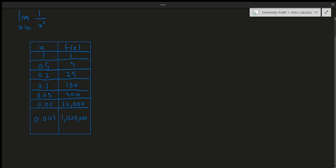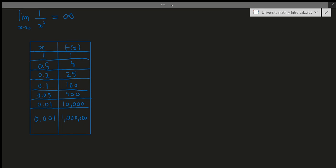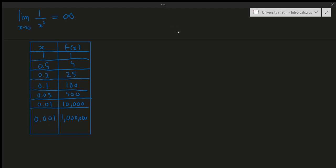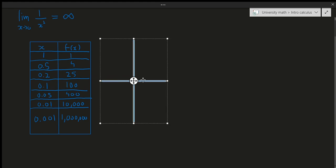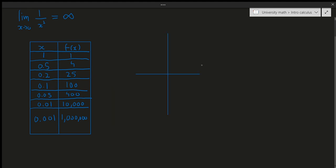This suggests that as the value of x approaches zero, the function gets really big — essentially reaching infinity. Looking at this graphically, if we draw y = 1/x², as we get closer and closer to zero the graph goes higher and higher. The graph of 1/x² roughly looks like this.